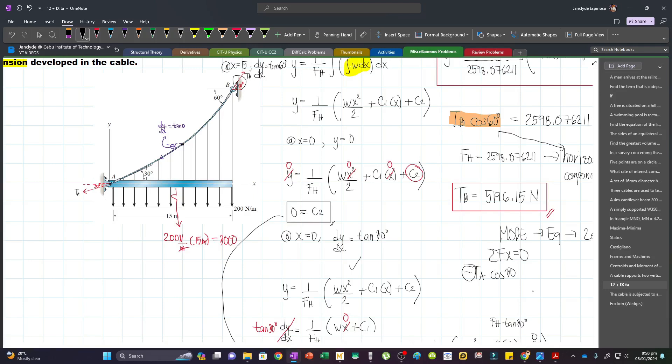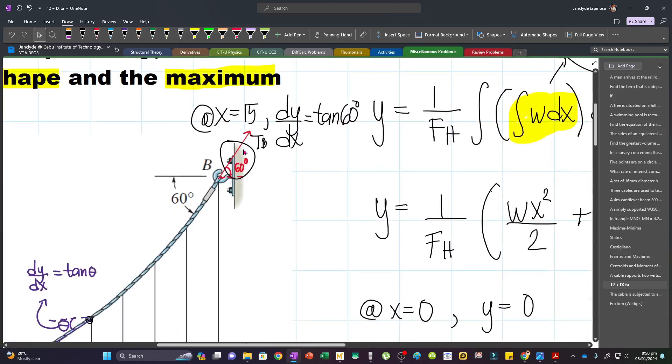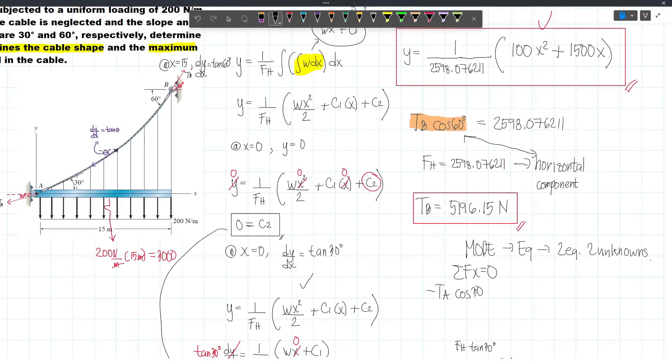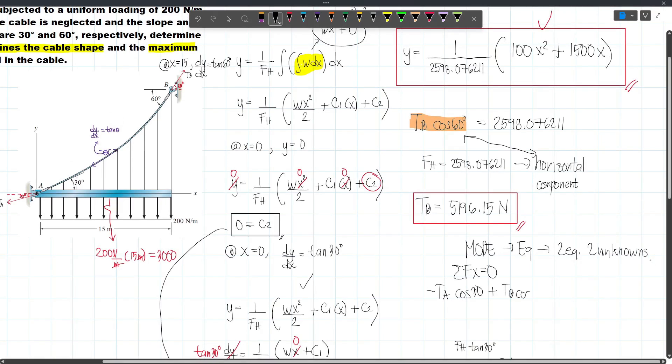And then again, this is negative because it's going to the left. And then we have the horizontal component of TB, which is TB cos 60. It will be acting to the right, so that will be plus TB cos 60. And then we will equate this one to zero.